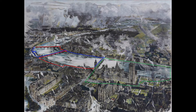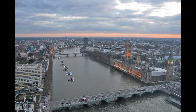By 1889 we can see the Houses of Parliament as we see them today, along with Westminster Bridge, Hungerford Bridge, a train station, Waterloo Bridge towards the end, and the Embankment which has just been built on the north side of the river.